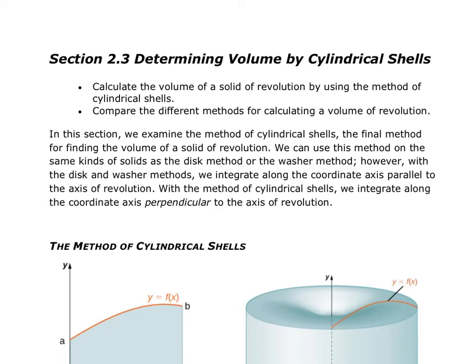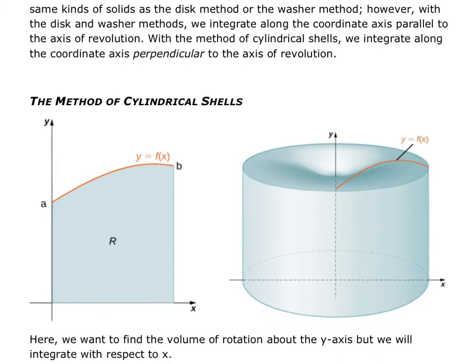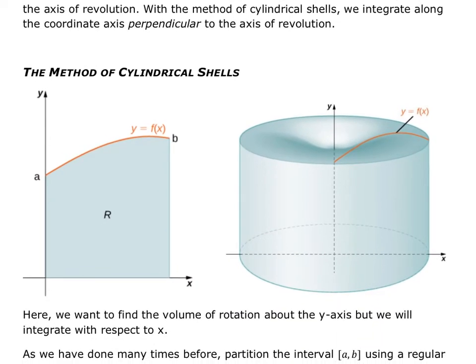In this video, we're going to talk about finding the volume of a solid by the cylindrical shell method. The biggest difference between the cylindrical shell method and the disk method is that when we are revolving around the y-axis, we do our integration with respect to x, not y. When revolving around the x-axis with the shell method, we integrate with respect to y.